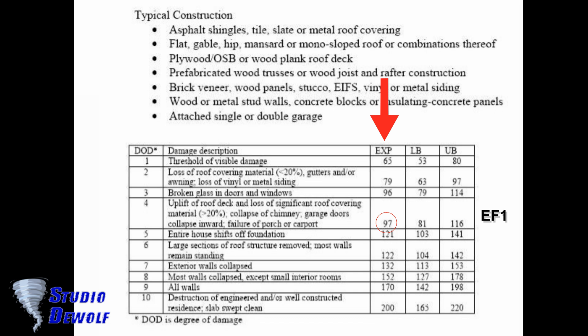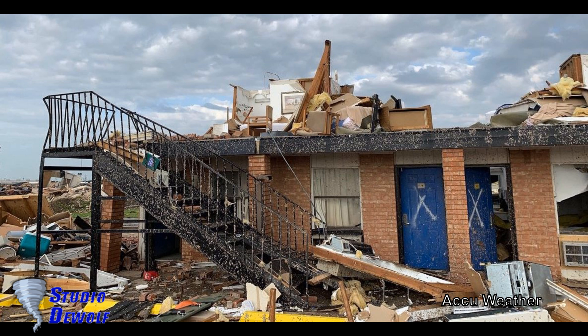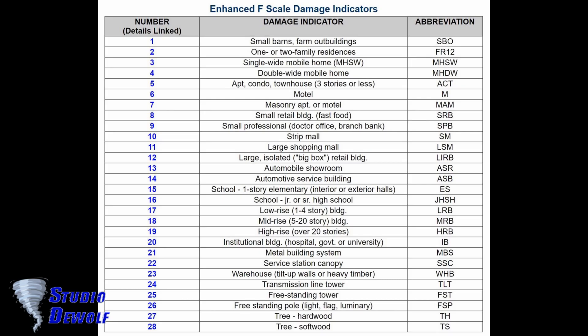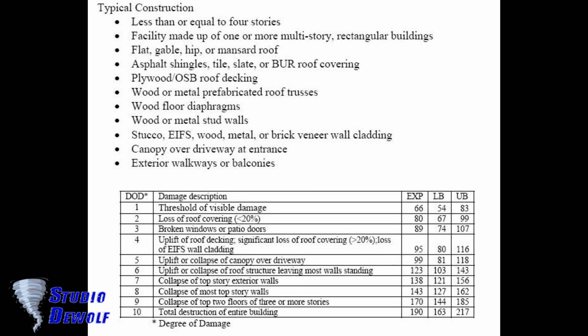In the next exercise we see a motel. The top floor is almost completely wiped out, while the ground floor is preserved although the windows are broken, and the metal staircase is slightly deformed. This corresponds to damage indicator number 6, motel. The wiped-out top floor matches damage description: collapse of most top story walls, which is degree of damage 8. The expected wind speed is 143 miles per hour — that is EF3.